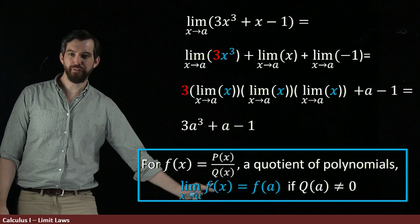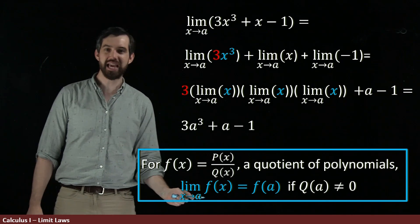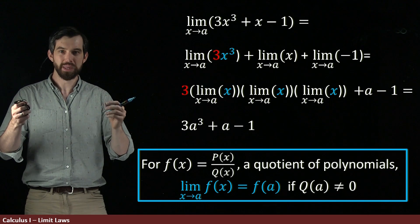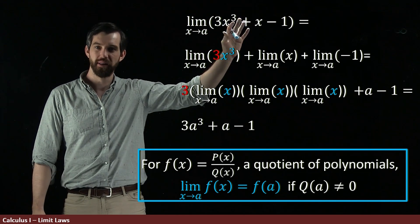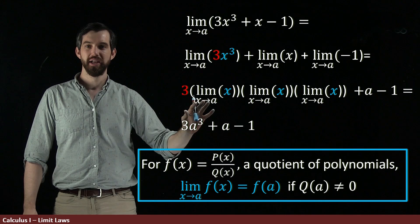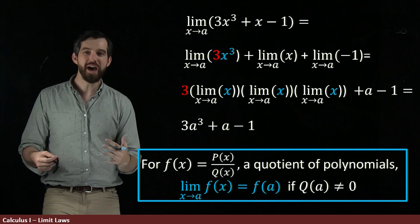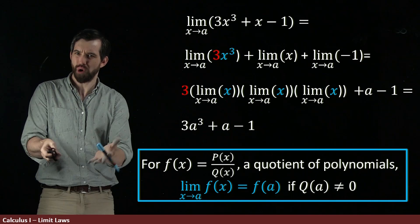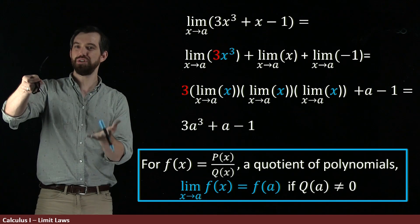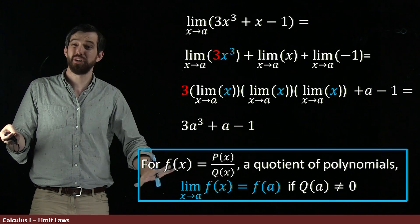Whatever rational function you might have, its limit is you just take that a that you're taking the limit to and you plug it in. The same way this polynomial, we just plugged it in. So, for a ton of these values, as long as you don't have a 0 on the bottom, as long as you don't have that problem spot, for these rational functions, limits are really easy. You just plug them in.